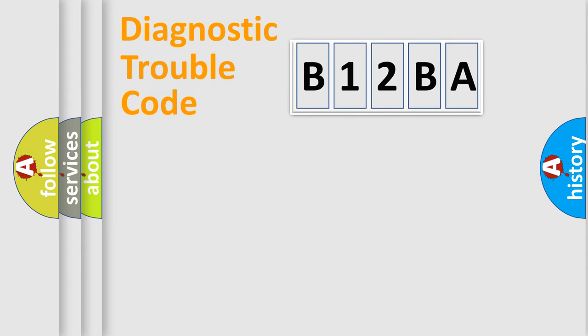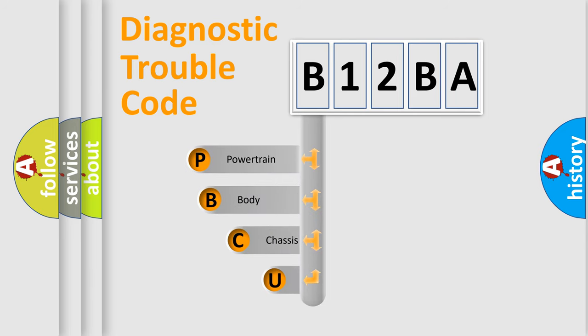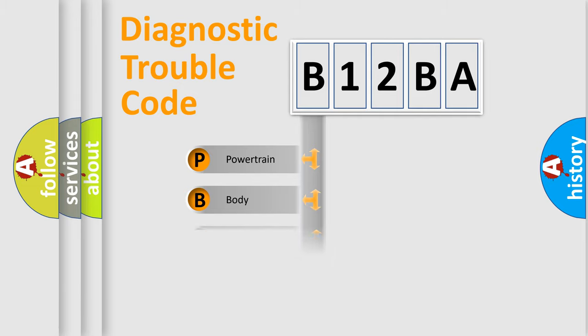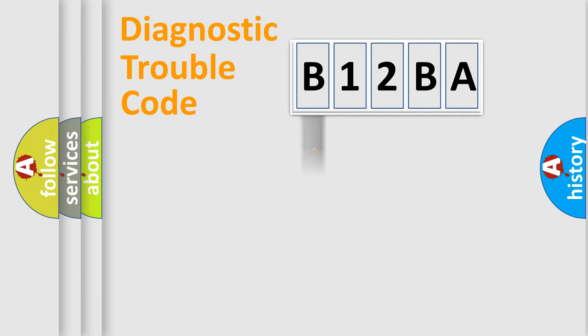Let's do this. First, let's look at the history of diagnostic fault code composition according to the OBD2 protocol, which is unified for all automakers since 2000. We divide the electric system of the automobile into four basic units: Powertrain, Body, Chassis, and Network.